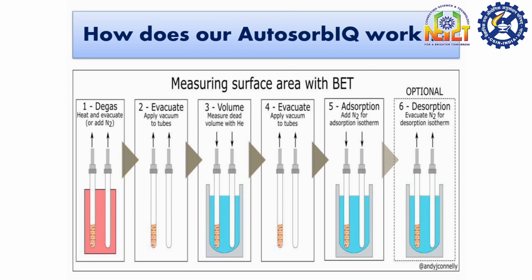To measure BET surface area we have to follow the following steps. The first step is degassing, the next step is evacuation by applying vacuum to the tubes. The third step is to measure the dead volume using helium. The fourth step is again evacuation and the last step is adsorption by nitrogen gas.